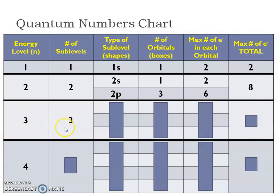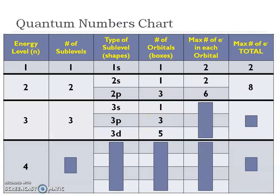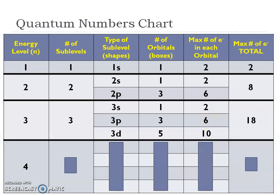The third energy level has three sublevels: s, p, and d. The number of boxes is one, three, and five. Multiplying by two gives two, six, and ten electrons each. So ten plus six plus two gives us 18. See that pattern — two, eight, eighteen. The fourth energy level should have four sublevels: s, p, d, and f, with one, three, five, and seven boxes respectively.